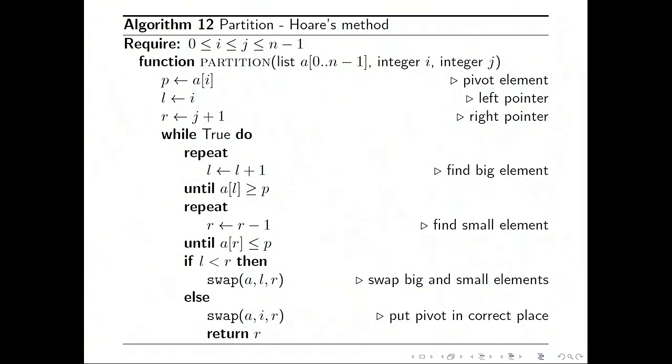We're going to partition the sublist starting at i and ending at position j using the pivot element a[i], the first element of the sublist. Then when we want to do the sublist, we will just call this with i equals 0 and j equals n minus 1.